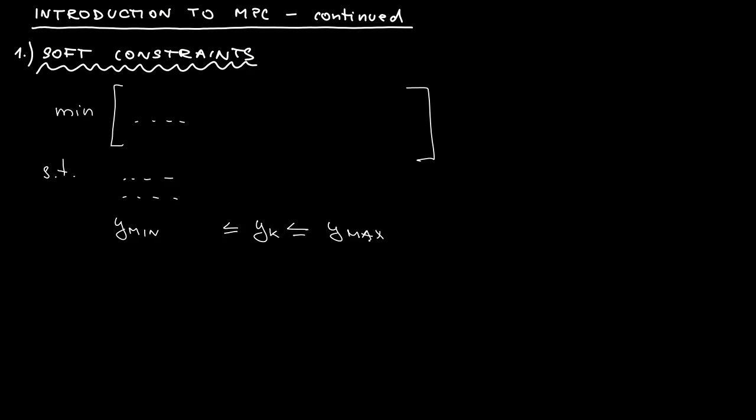Now, the trouble with this formulation is that it can happen if your constraints are too stringent that your MPC controller could not find a feasible solution. The problem will be infeasible and that may be a major problem.